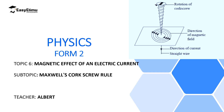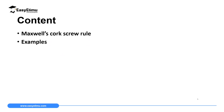This rule is Maxwell's Cork Screw Rule. My name is Albert, and I hope you will enjoy the lesson. By the end of this lesson, I expect you to be able to define and explain how to use Maxwell's Cork Screw Rule. Then later we are going to handle a few examples involving determining the direction of the magnetic field around a conductor by using Maxwell's Cork Screw Rule.